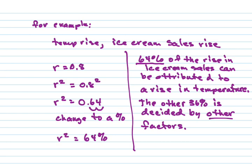And that's all there is to it. You'll either be given r, which you then square, turn into a percent, and write the sentences to describe it. Or you might be given a sentence like '75% of the whatever can be attributed to that' — you would take 75%, change it into a decimal, and then take the square root to find your r. So you can work forwards or backwards.